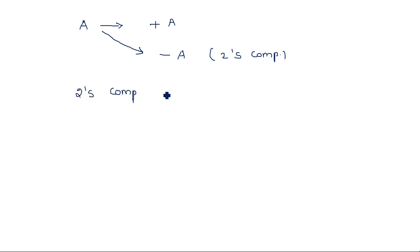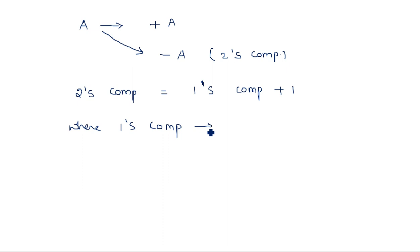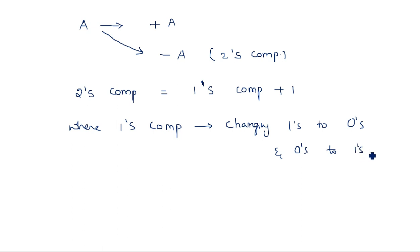2's complement equals 1's complement plus 1. What do you mean by 1's complement? 1's complement is nothing but converting 1's to 0's and 0's to 1's. So in 2's complement, first we need to convert all 1's to 0's and 0's to 1's, and then we add 1 at the rightmost bit.